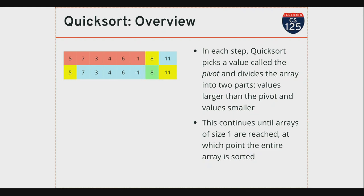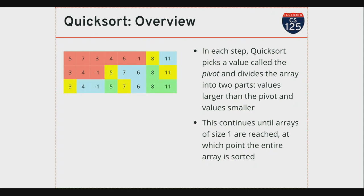I started with an array of size eight to sort. Now I have an array of size six and an array of size one — the array of size one is already sorted. For the array of size six, I do the same thing again: pick a pivot value. In this example I'm choosing the first value in the array as the pivot — there are multiple ways to pick a pivot, and the performance of quicksort really depends on that choice. I pick five as the pivot, reorder the array so values smaller than five are on the left and values larger or equal are on the right, creating smaller problems to continue.